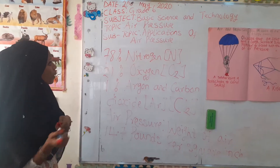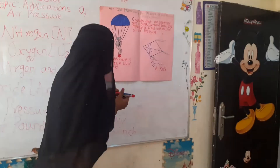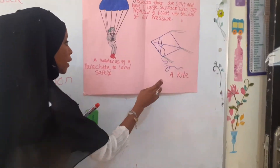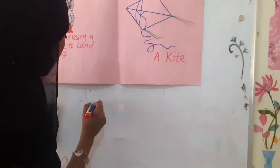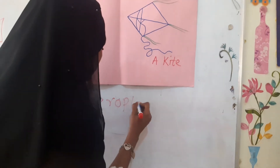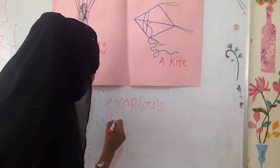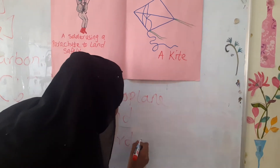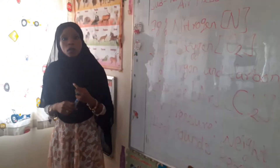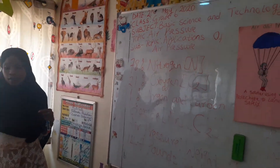Now, when we talk about applications of air pressure, we can see examples such as a parachute, a kite, an airplane, wind, and birds. But the most common example of the application of air pressure is a kite.